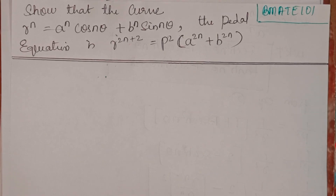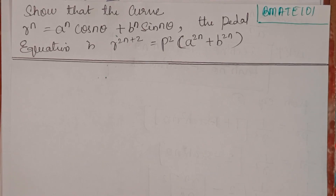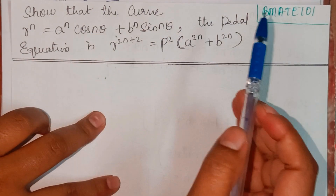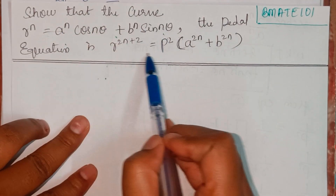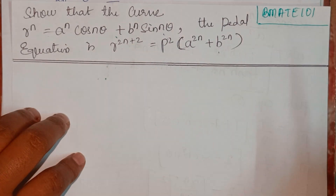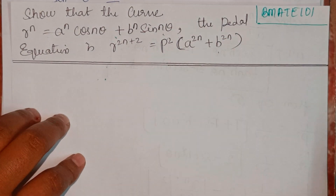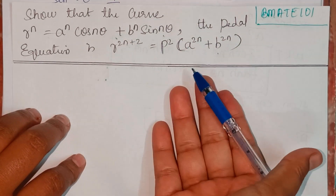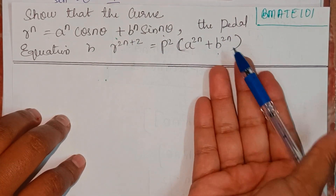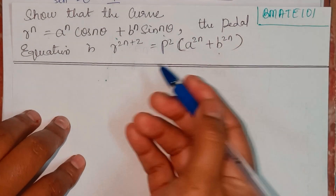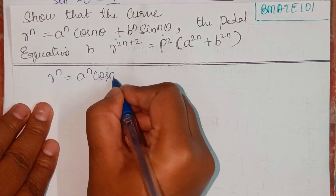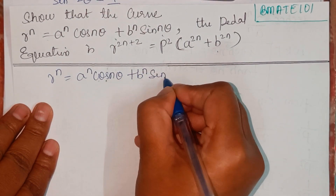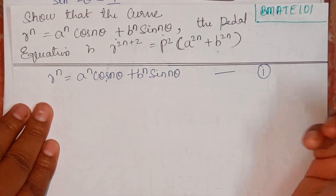Welcome back to my YouTube channel Learn with Sumi. In this video we have to show that a given curve has a specific pedal equation — the answer is already given and we just have to show the proof. The curve is r^n = a^n·cos(nθ) + b^n·sin(nθ). Let me consider this as equation one.